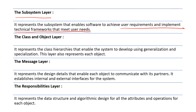What is the technical framework we have used? That is the sub-system layer. Next, we have the class and object layer. It represents the class hierarchies that enable the system to develop using generalization and specialization. This layer also represents each object, each entity, and the specialization and structure created for this layer.